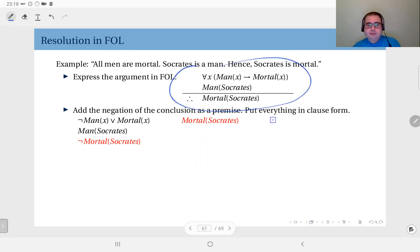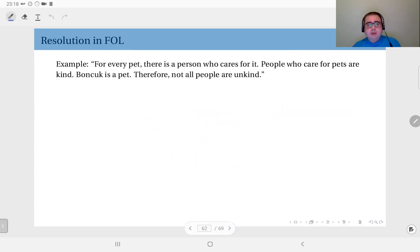Let's do another example. For every pet, there is a person who cares for it. We have done the Skolemization for this statement already. Then, people who care for pets are kind. Bonjuk is a pet. Therefore, not all people are unkind. Now again, I'm going to add the negation of this conclusion into my set of premises, and I'm going to also put these in clause form.